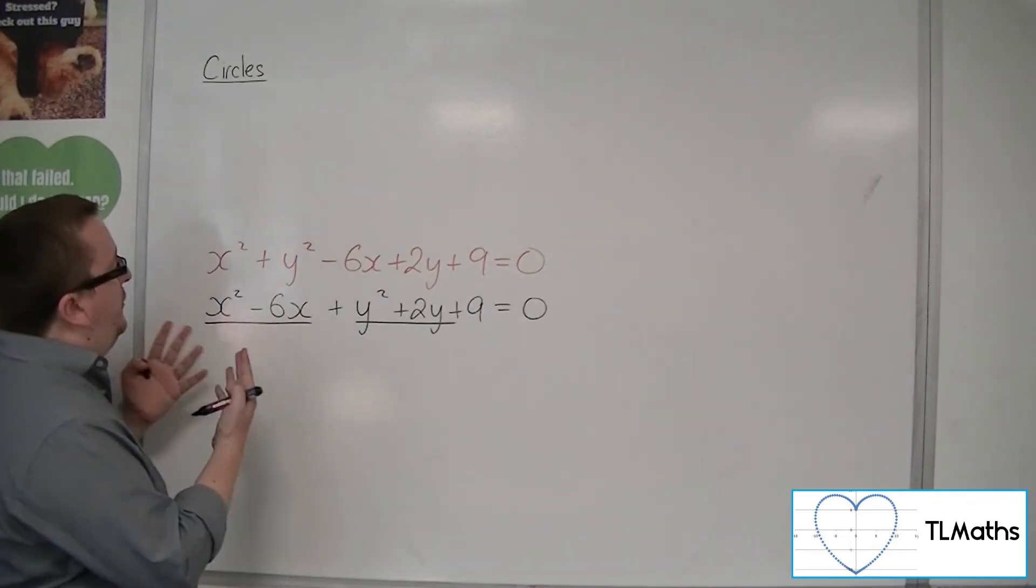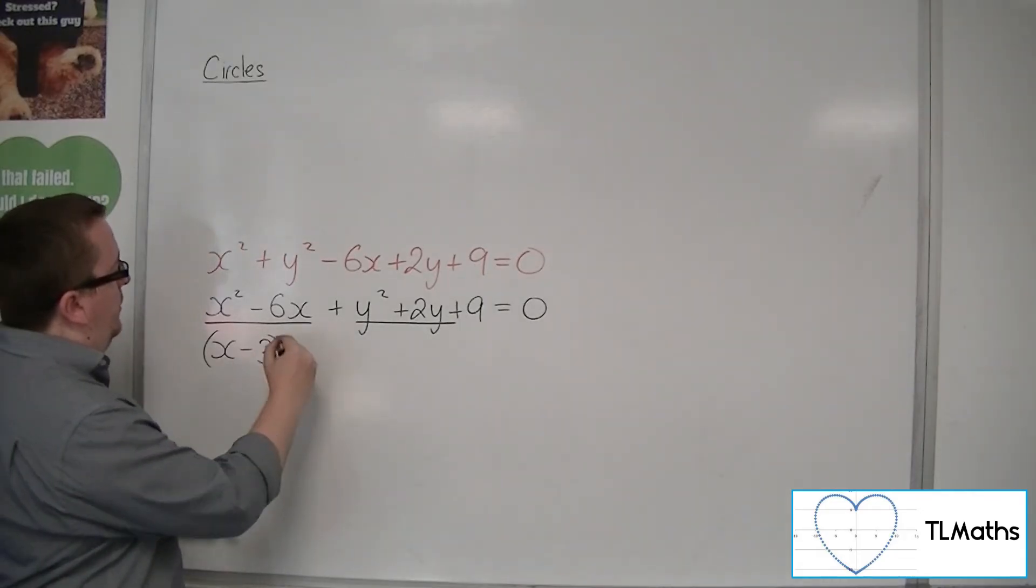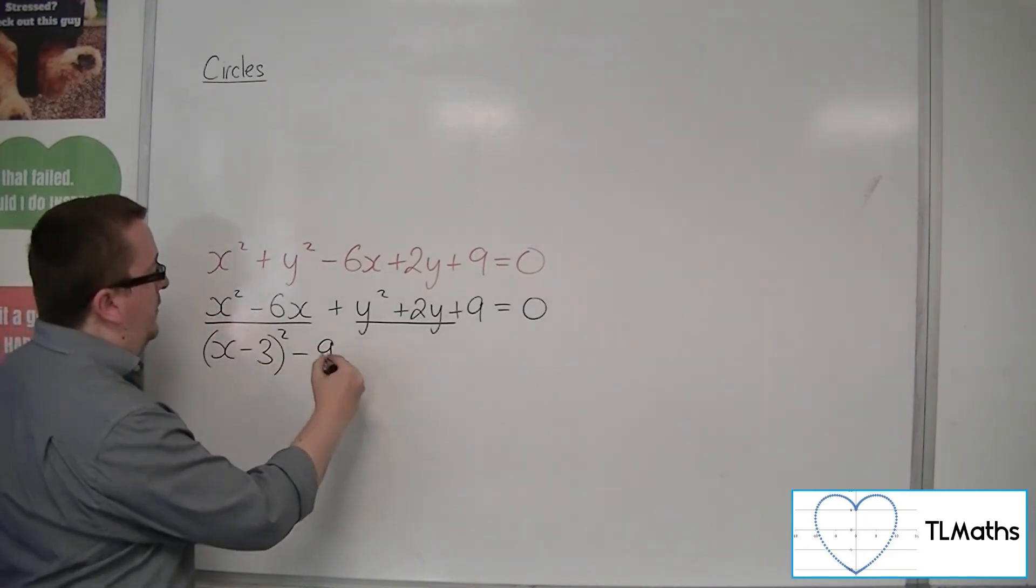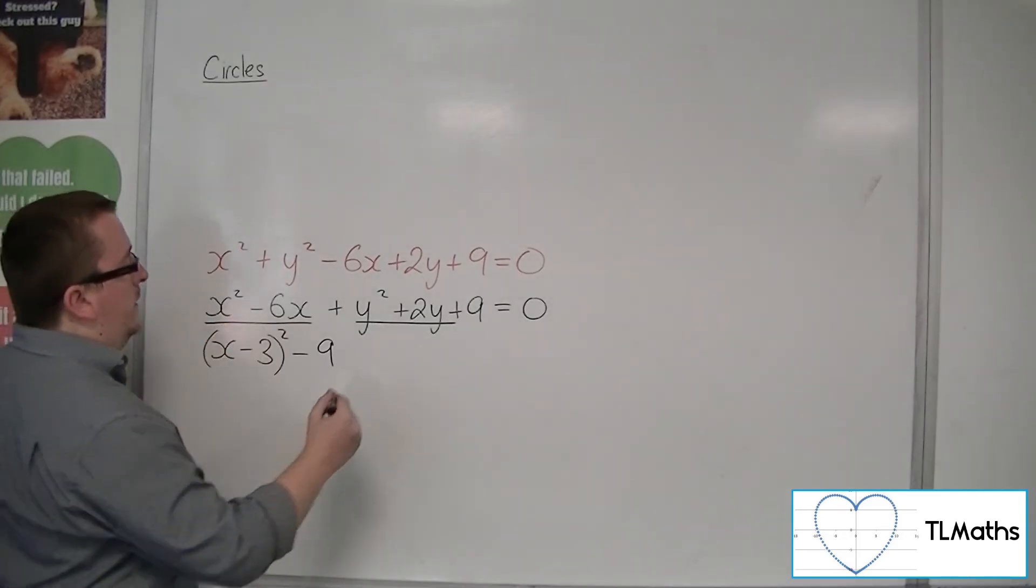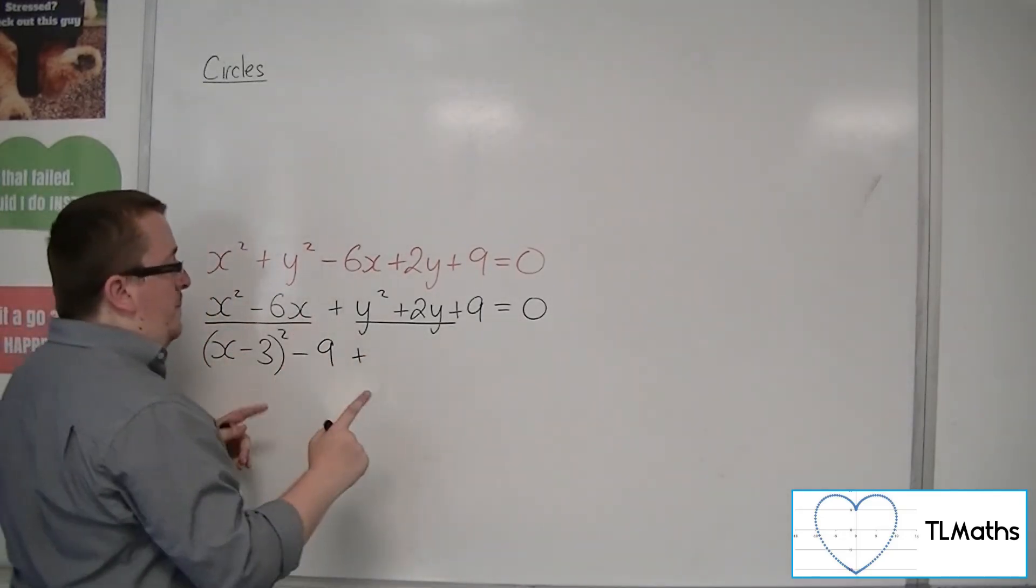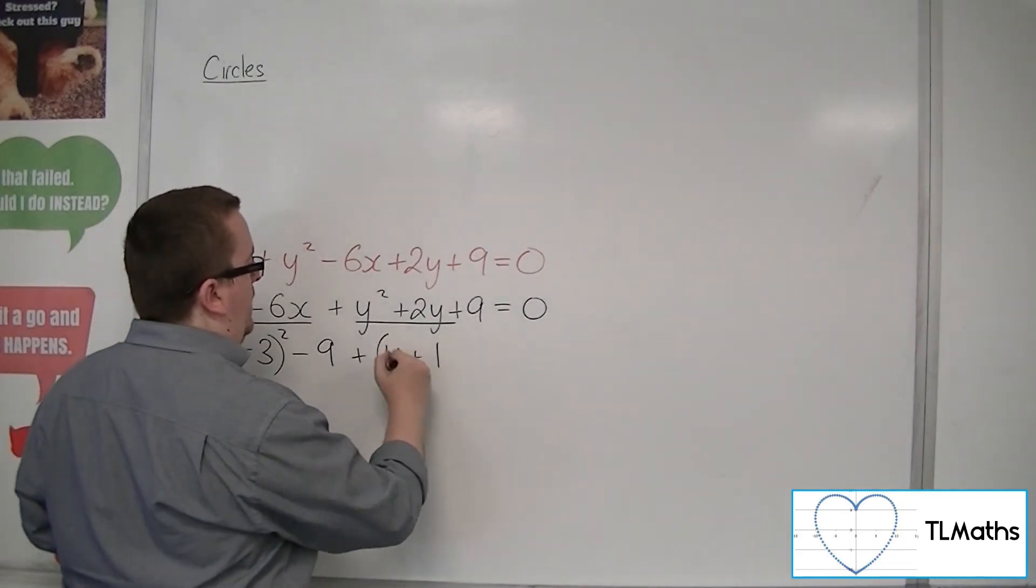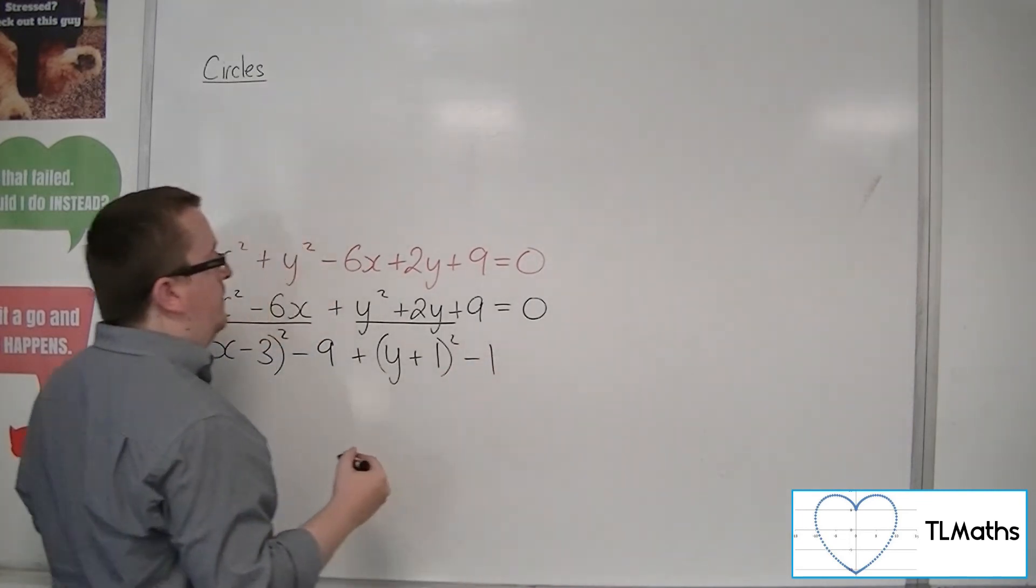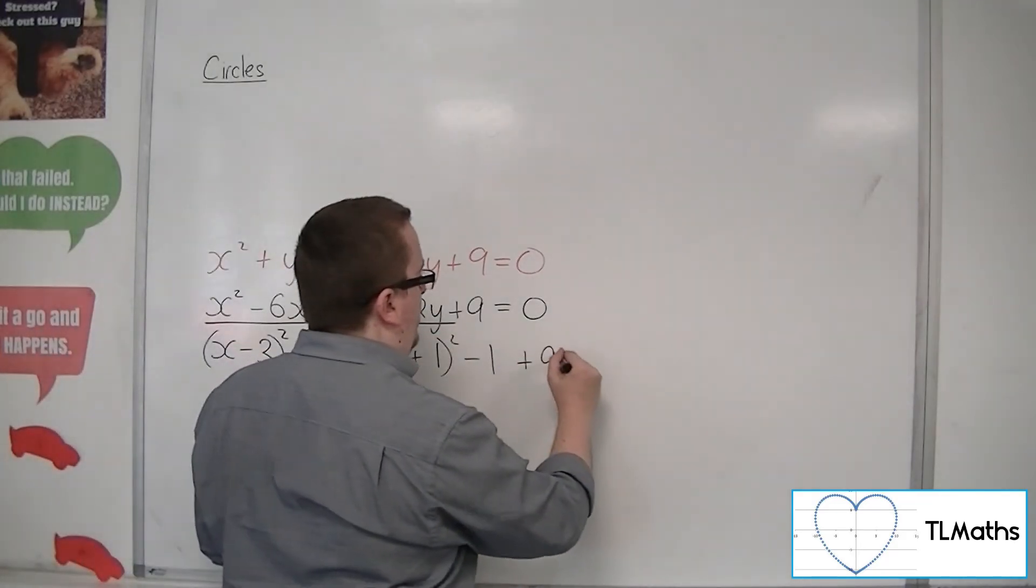The x squared minus 6x, I can complete the square and write that as x minus half the 6, so 3 squared, take away minus 3 squared, so minus 9. That's from the first bit. Then the second bit, the y squared plus 2y, so y plus half of 2, so 1 squared, take away that number squared, so take away 1. That's the second bit, and I've still got that plus 9 on the end.